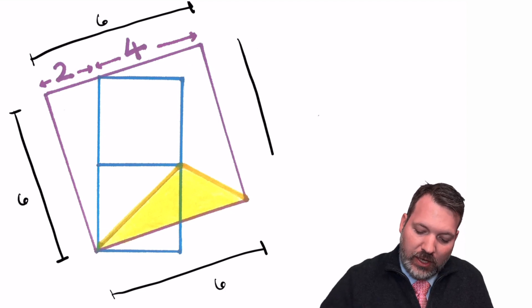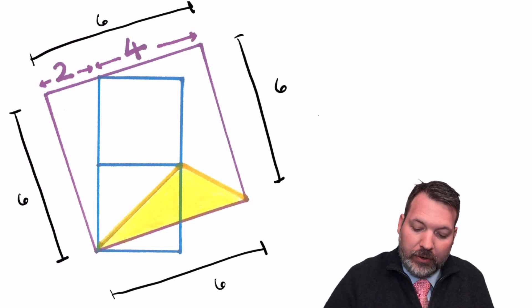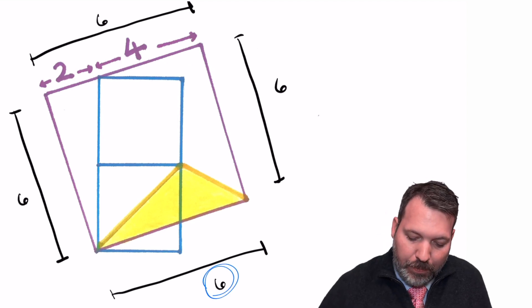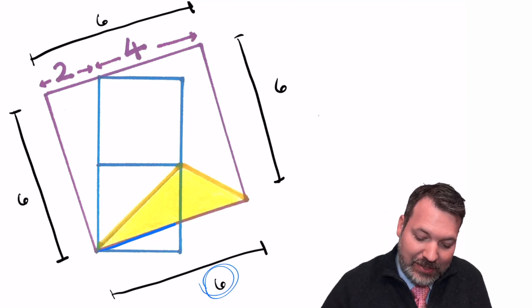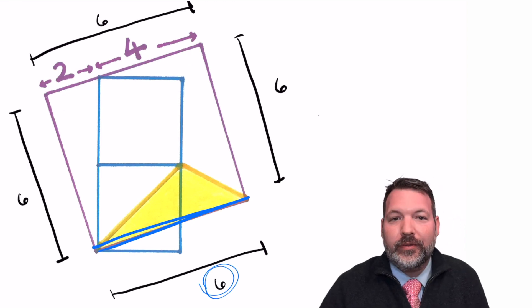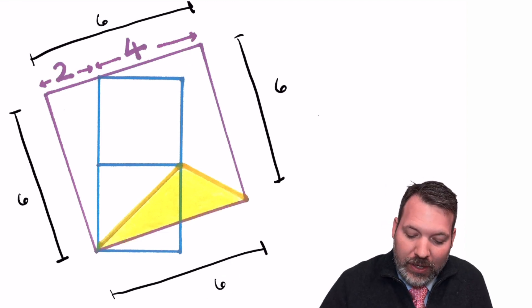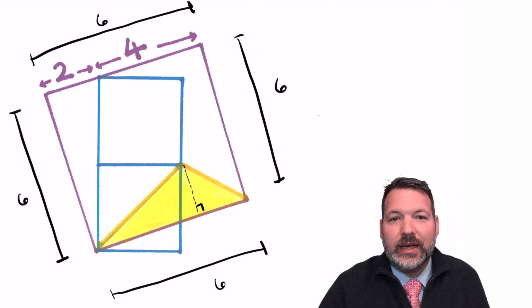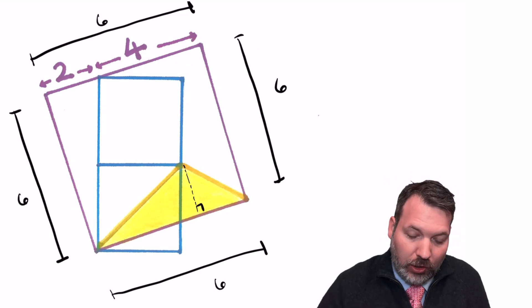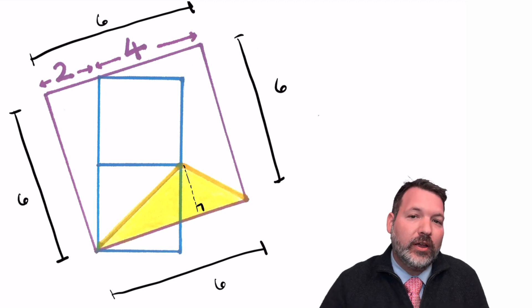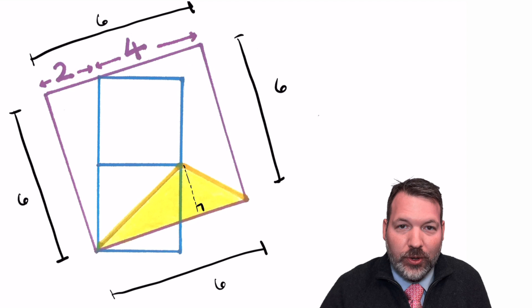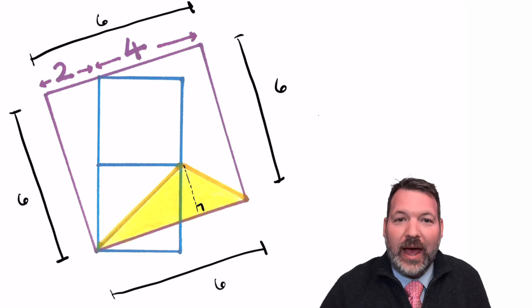This length here is 6. This side over here, not that I think it matters, is also 6. Importantly for our purposes, that base of 6 is the same as the base of the triangle that we're interested in. So already, if I can just figure out the height of that particular triangle, then I can simply plug that height in along with the base of 6 to our area formula for a triangle. Area equals base times height divided by 2. So it feels like we're already at least halfway there.